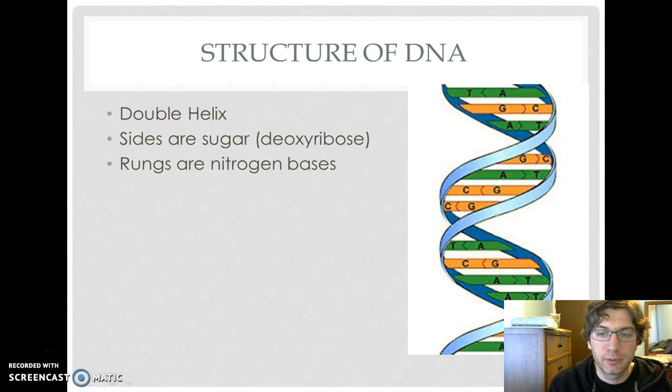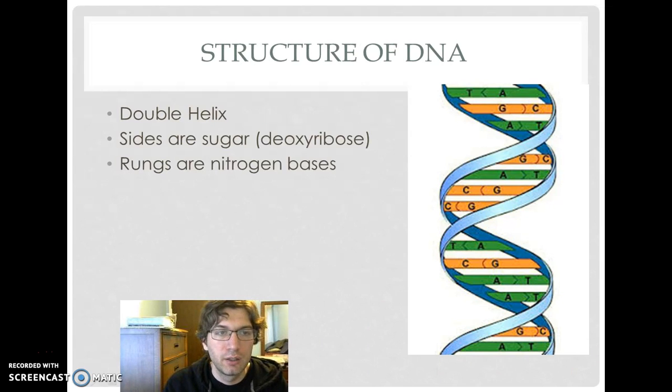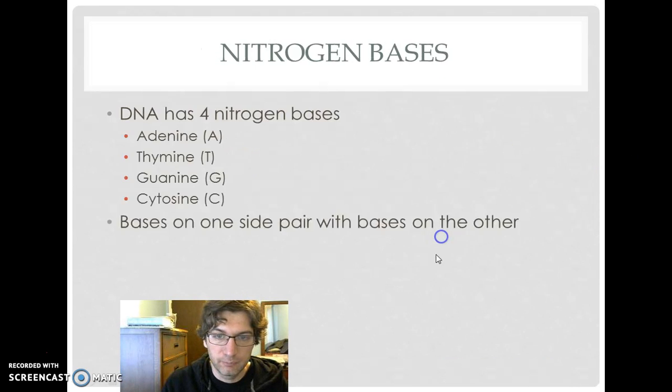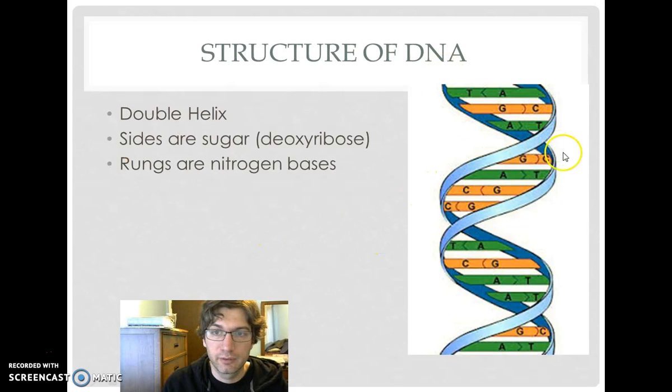So here, I am going to move my picture out of the way a bit, is our DNA molecule. It is a double helix structure. It looks like a ladder that is kind of twisted. That is a double helix shape. Our sides of our ladder are going to be made up of a sugar called deoxyribose.